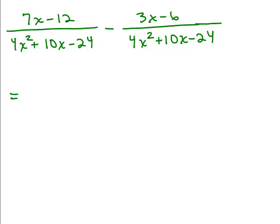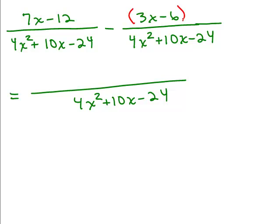Have a common denominator so we can begin by writing that as the denominator. And since this is a subtraction, remember, we're going to subtract that entire numerator after the minus sign. So we're going to change signs when I subtract that. So I take the first numerator, 7x minus 12, and I'm going to subtract the 3x minus 6. Let's go ahead and just do the distributive property now. That will be a minus 3x and a plus 6.